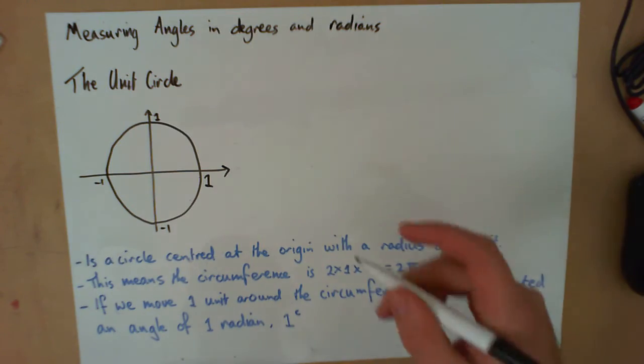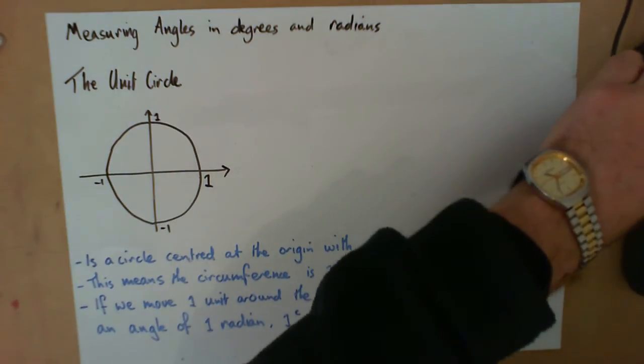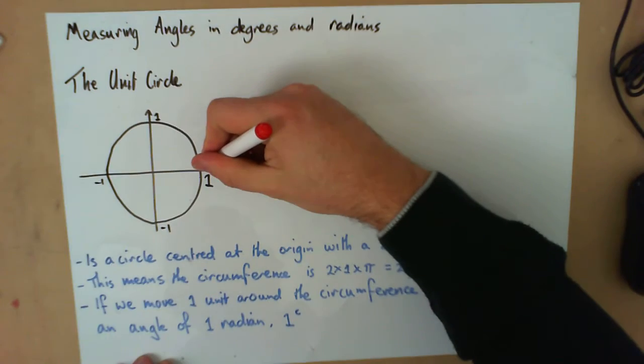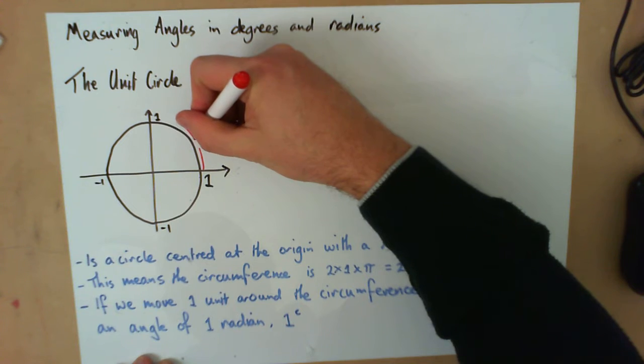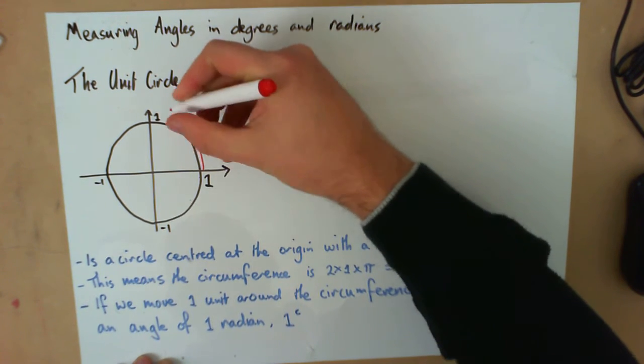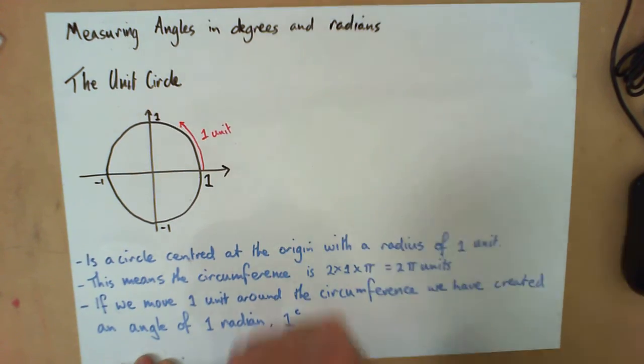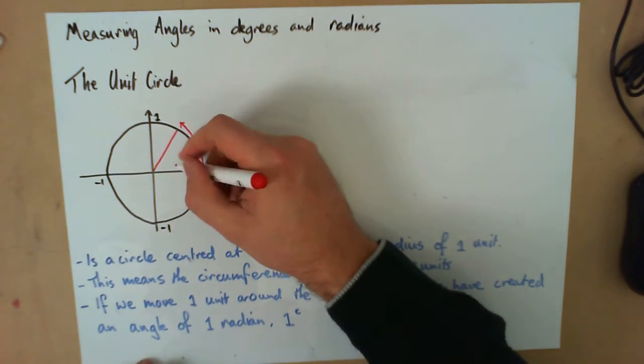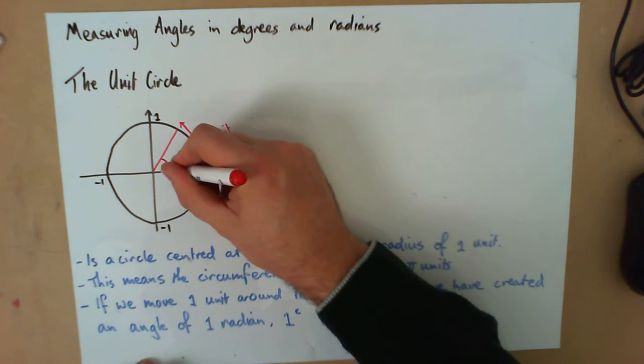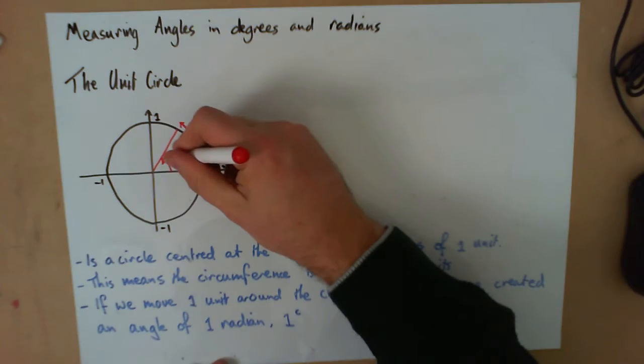If we move around the circle, so if we start here and come around the circle like this and we move around 1 unit, then we can see that this angle here, this bit here, that's defined as what we call 1 radian.